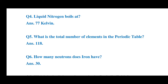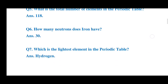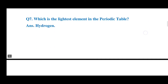Question 6: How many neutrons does iron have? The answer is 30. Question 7: Which is the lightest element in the periodic table? The answer is hydrogen.